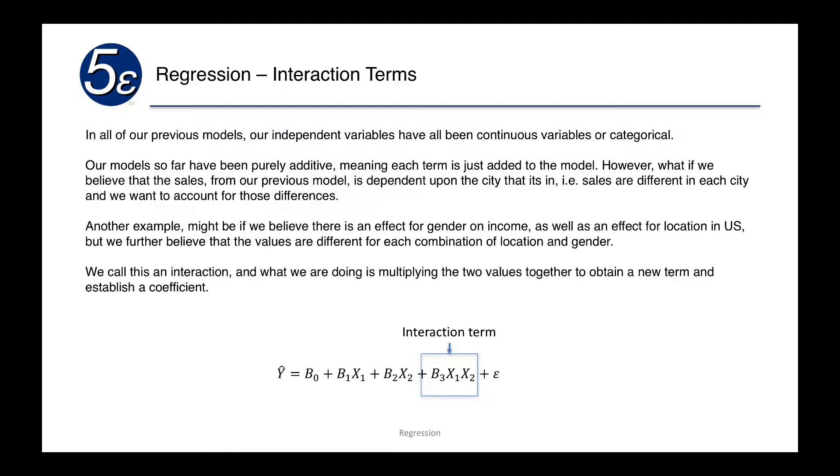Another example might be if we believe there's an effect for gender on income, as well as an effect for location in the U.S., but we further believe that the values are different based on the combination of location and gender. We call this effect an interaction effect.